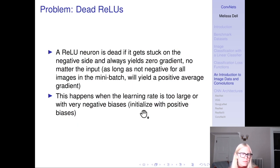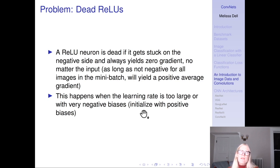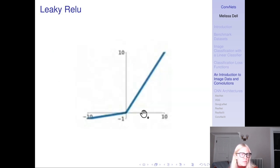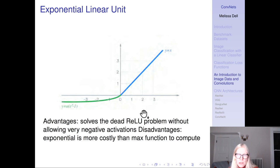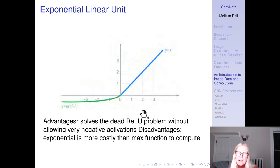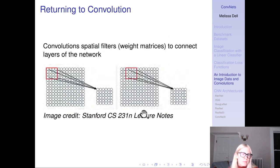The problem with ReLU is that you can get dead ReLUs — neurons that get stuck on the negative side and always yield zero gradient no matter the input. This can happen when the learning rate is too large or with very negative biases if you initialize your network in the wrong way. There are other functions like the exponential linear unit, and we'll see another one when we get to the transformer. The key point is that in a neural network, we take the dot product, sum up, and pass through a nonlinearity — this is essentially what is meant by that.